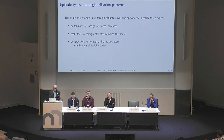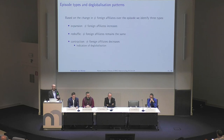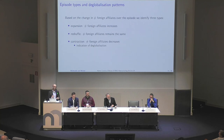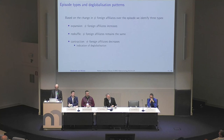Once we have these episodes, we look at the change in the number of affiliates and classify them into three types: expansion (number of foreign affiliates increases), contraction (number of affiliates decreases), and reshuffling (you add one affiliate and drop another within the episode, so the total stays the same). Contractions are a sign of deglobalization because the network is shrinking its number of foreign affiliates.